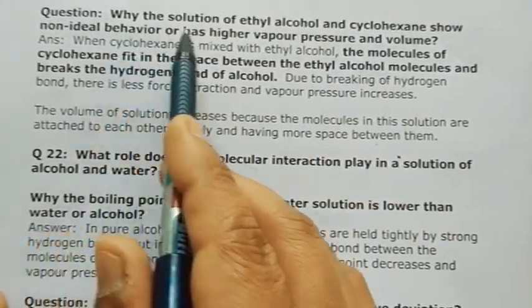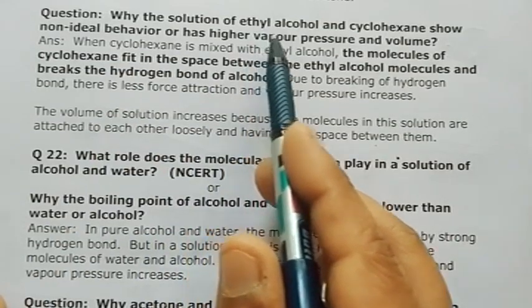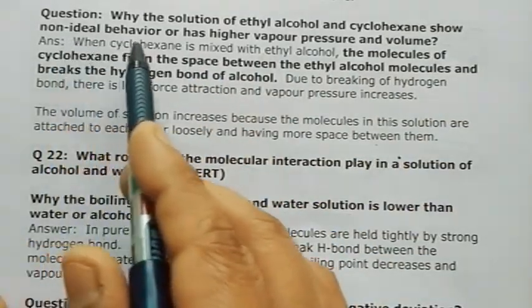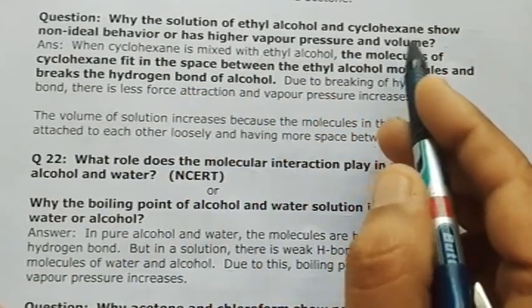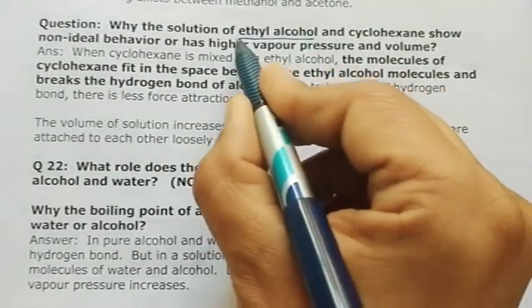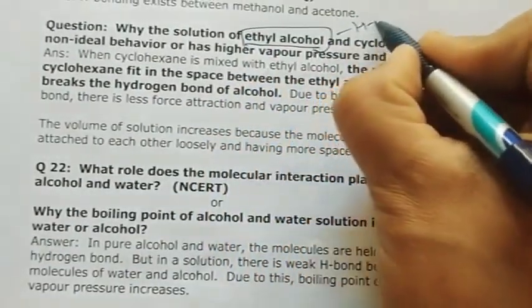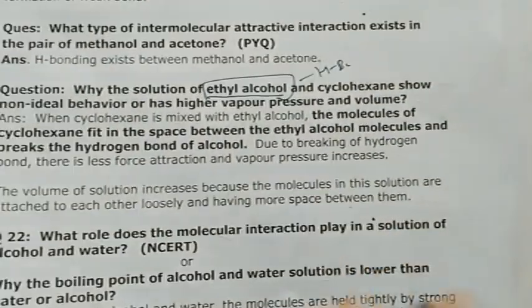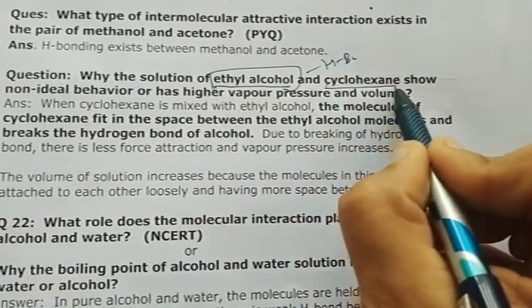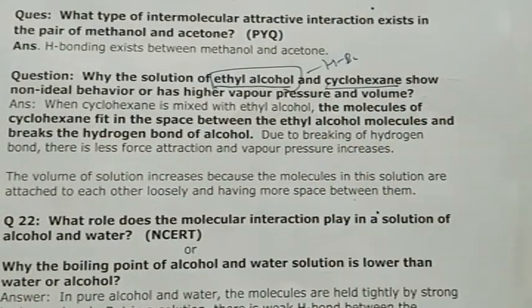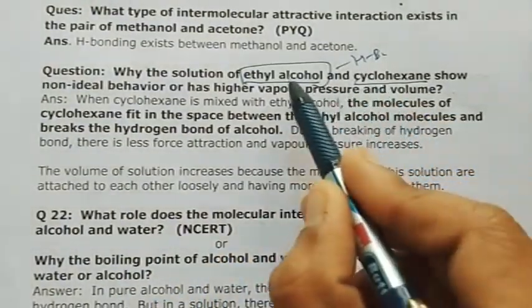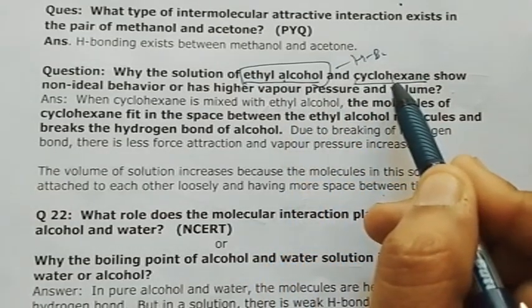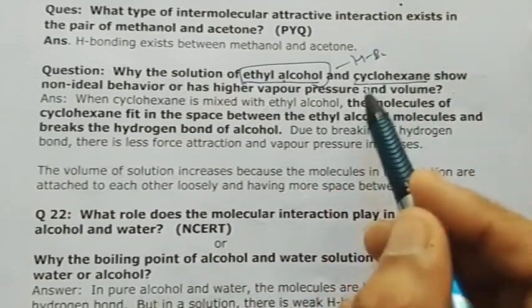Next question: why does a solution of ethyl alcohol and cyclohexane show non-ideal behavior with higher vapor pressure? Ethyl alcohol has H-bonds (it has OH group). Cyclohexane is a hydrocarbon — it contains only carbon and hydrogen, so it has no H-bond, no electronegative element like N, O, or F.